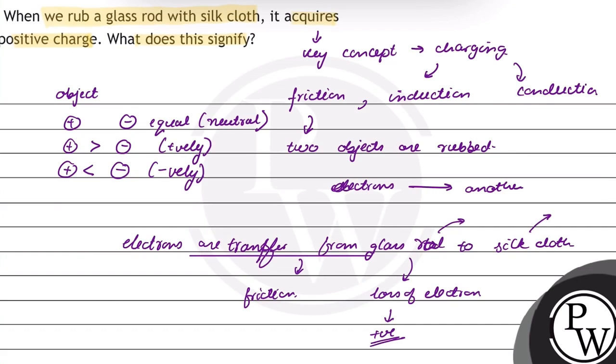Whereas silk cloth has more electrons than protons, so it will be negatively charged.